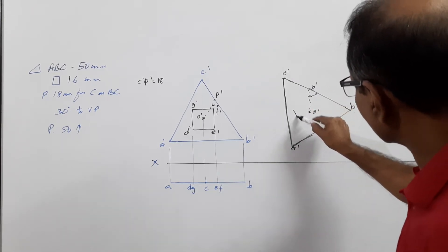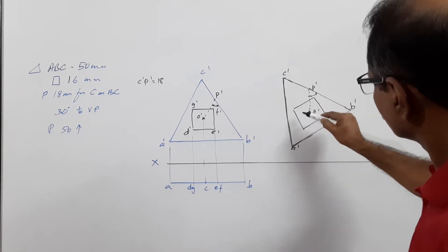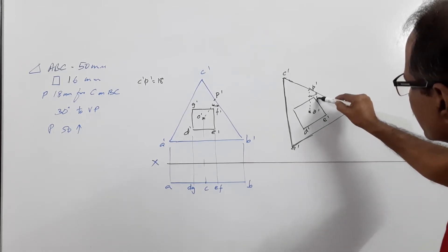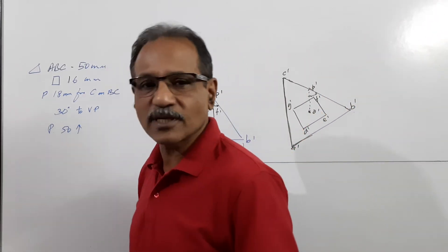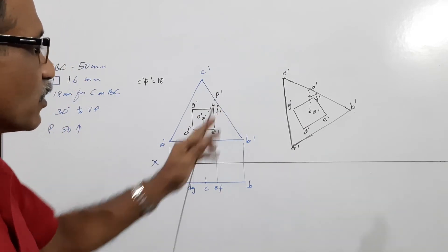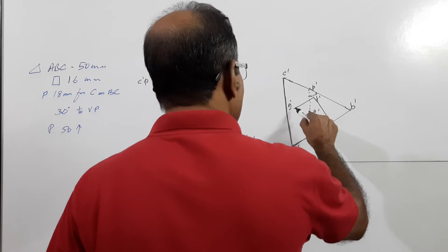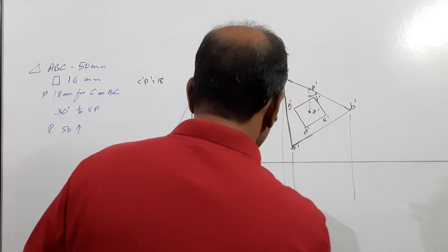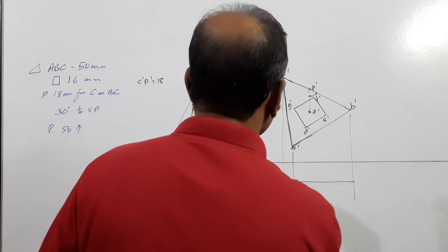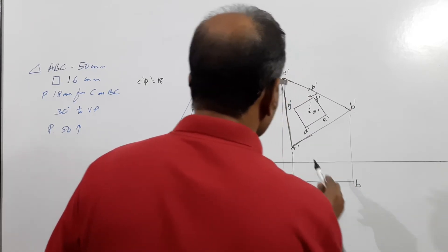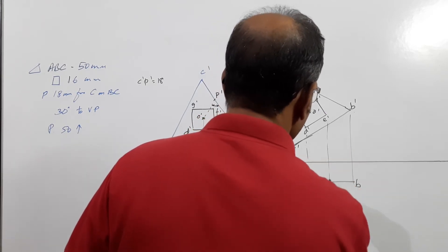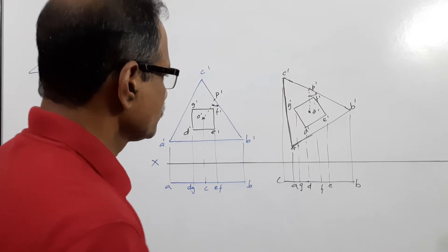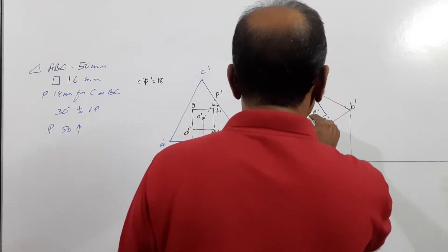Now consider the square inside: A-dash, B-dash, C-dash, D-dash, E-dash. You have to be extremely careful in reproducing the points. I will reproduce the square — it looks a little bit big, so I am reducing the size. Drop vertical projectors down and reproduce the plan at the same level: A, B, C. Then drop down D, E, F, G.